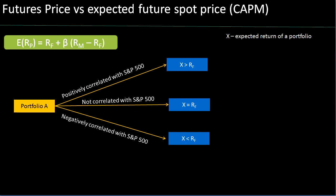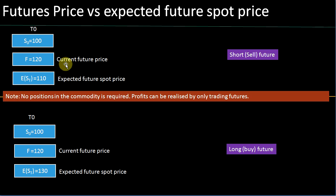In this module, we are going to talk about why the futures price can be different from the expected future spot price and how we can use the capital asset pricing model to explain some of these differences. In the previous section, we discussed that there are some instances where you would have a current futures price of a particular asset that could be different from the expected future spot price. For example, let's assume an asset is trading at $100 today and the six-month futures price of that particular asset is $120.